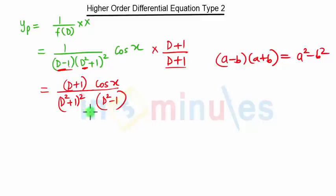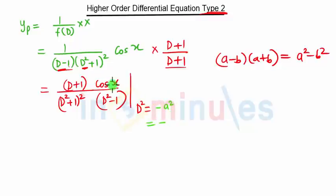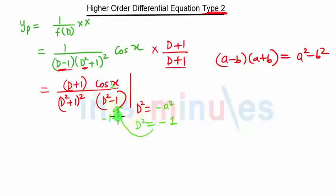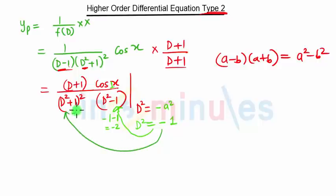In the denominator we have d squared, and for Type 2 we substitute d squared equal to minus a squared. In our case a is 1, so we substitute d squared equal to minus 1. This gives minus 1 and minus 1, so this part is not creating any problem — it equals minus 2. But when we substitute minus 1 in the other part, it becomes minus 1 plus 1, so this part is creating a problem.